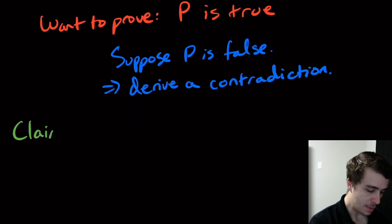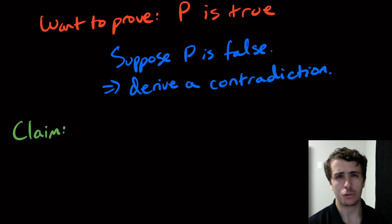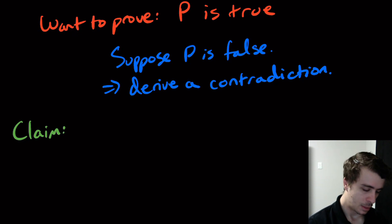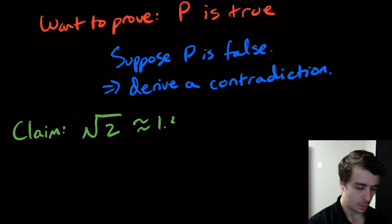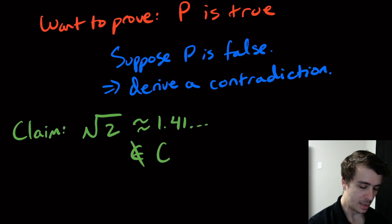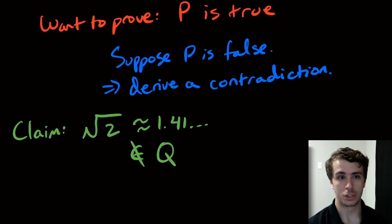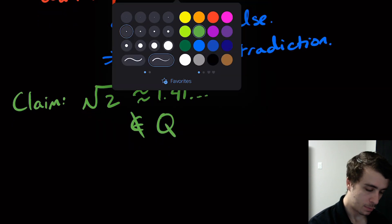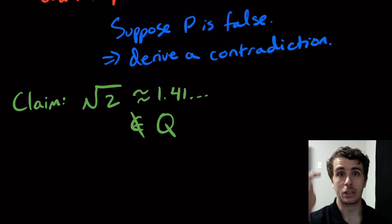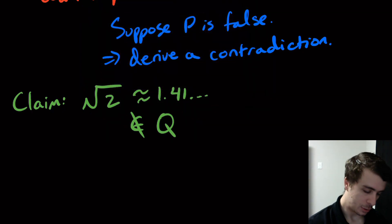Let's do some examples. Here's a claim — this is actually a very famous proof you've probably seen before. The claim is that the square root of two, which is approximately 1.41 etc., is not in the set of rational numbers. This says that I can't write the square root of two as the division of some integer over another.